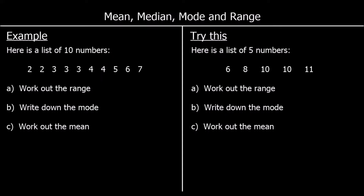In this video we're looking at the mean, the median, the mode and the range. The mean, the median and the mode are three different types of averages, and the range is a measure of how spread out the data is.